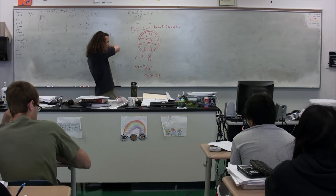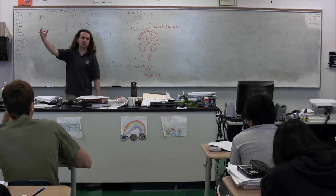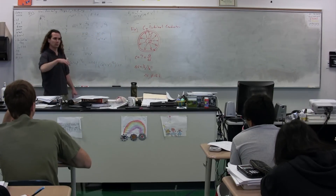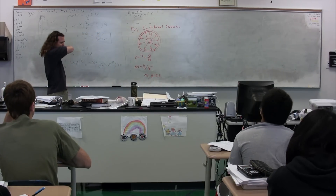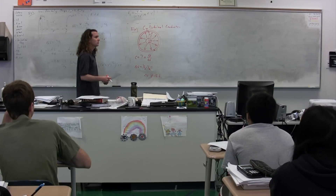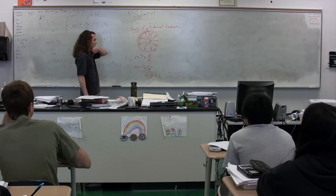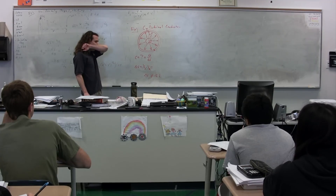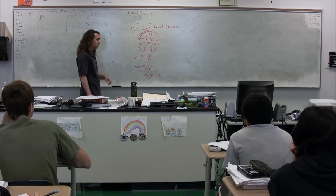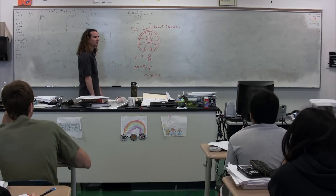Student question: Does the charge on the outside show? The answer is negative Q. A capacitor always has positive charge on one conductor and negative charge on the other, and they are equal and opposite. By definition, a capacitor always has positive charge on one and negative charge on the other, and they are equal and opposite. Q is just a variable — we define the charge that way.